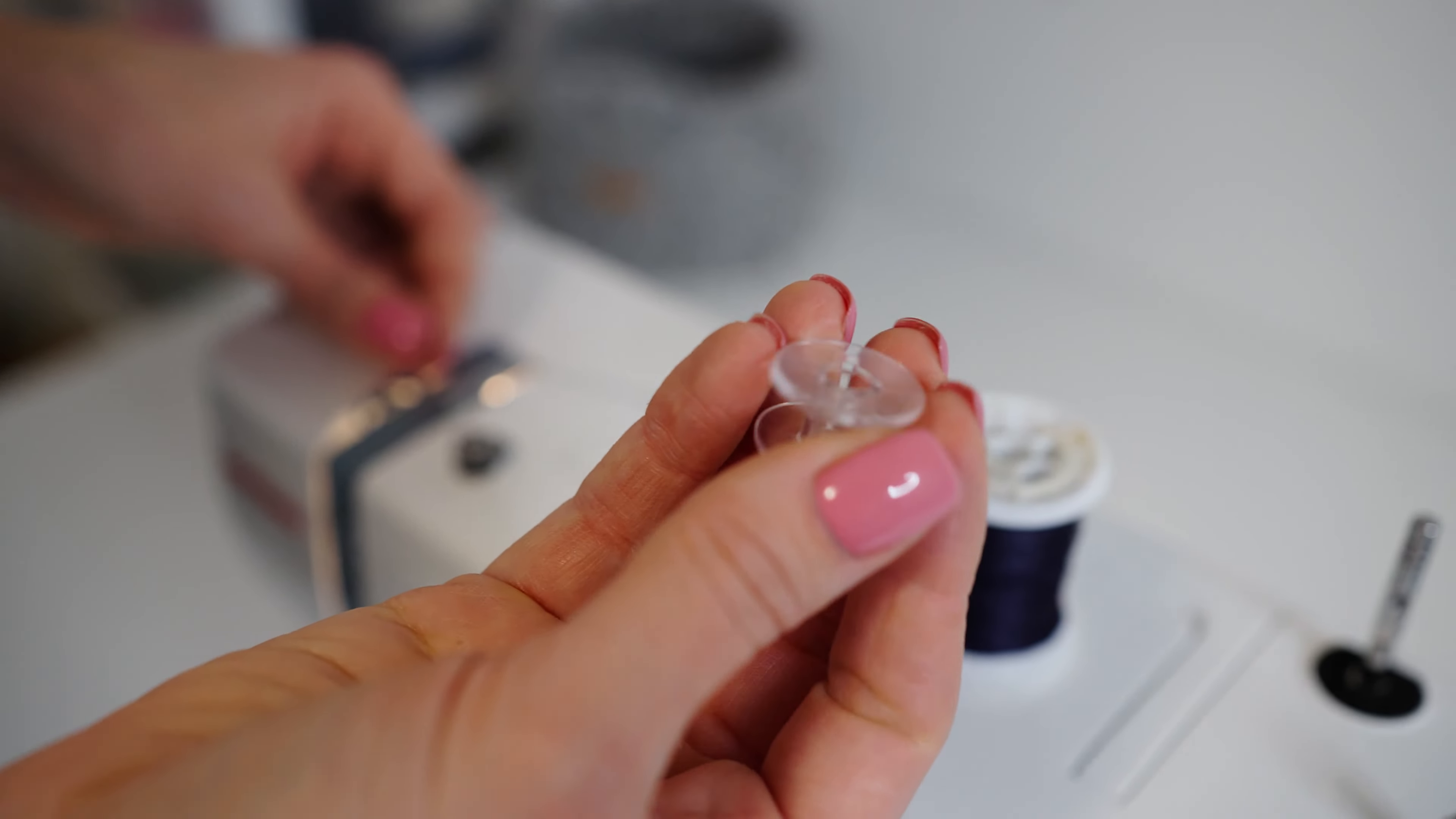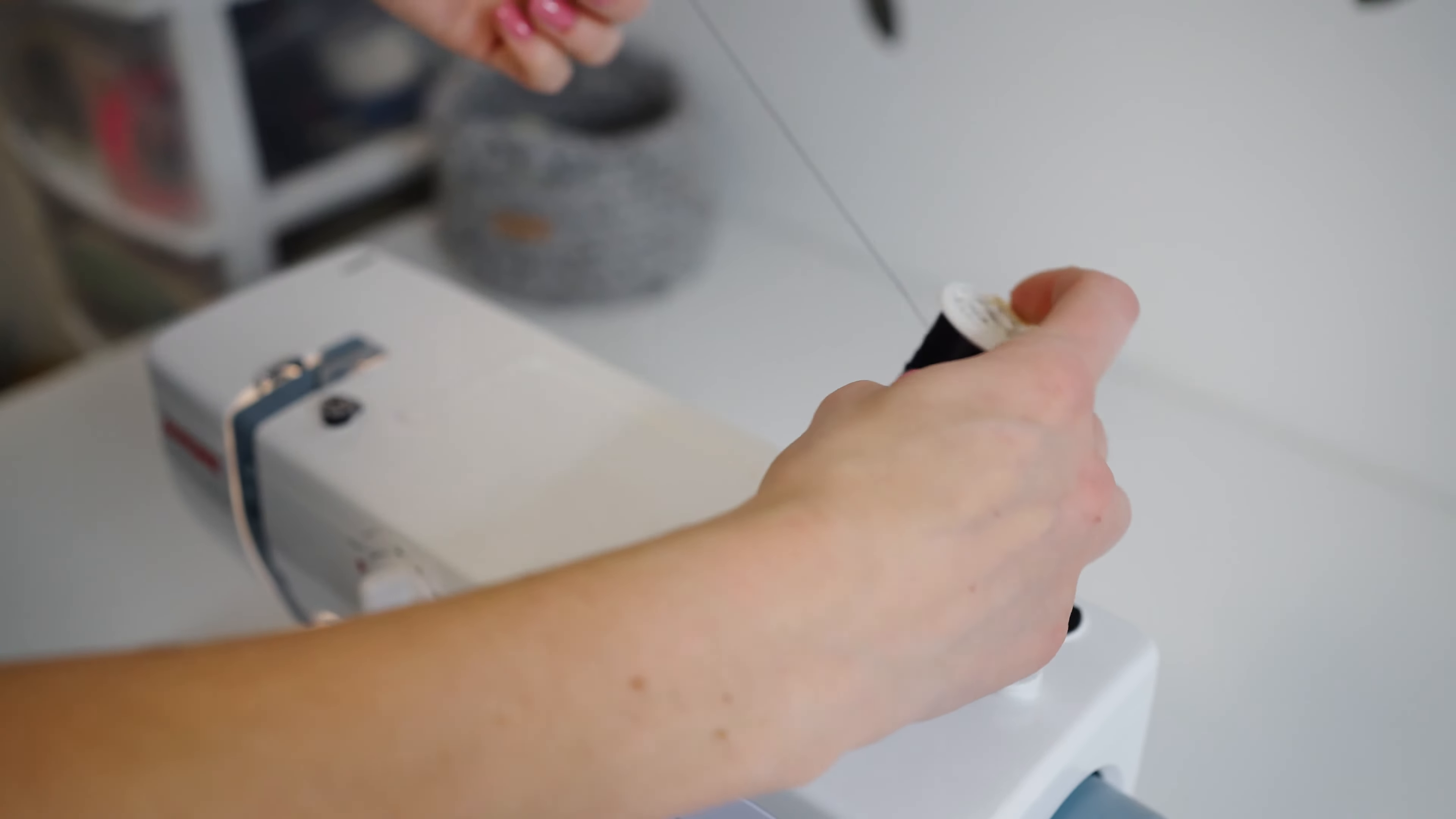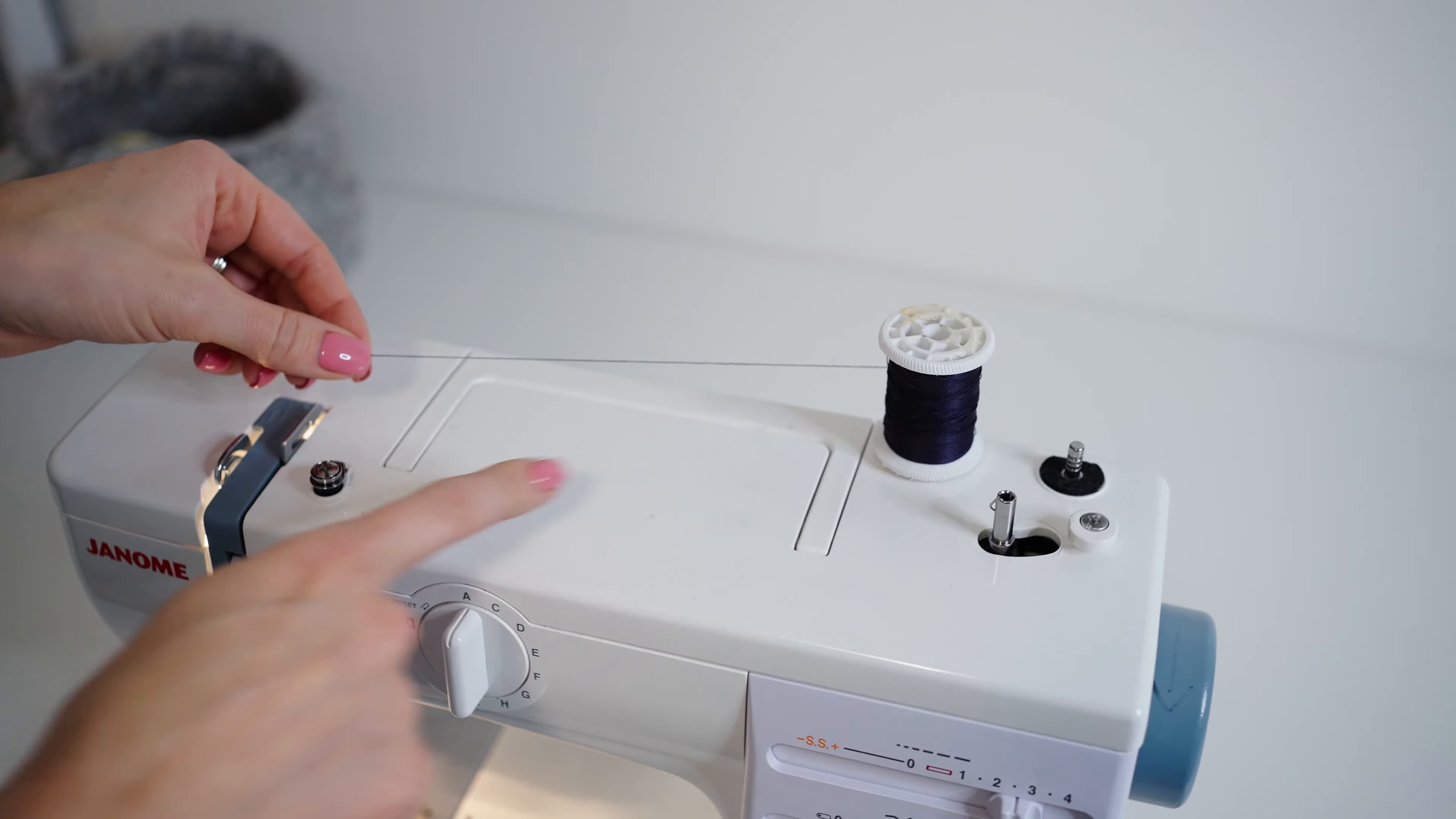I'm going to show you how to refill a bobbin. So this plastic thing is called a bobbin. You're going to take the thread that you want, the color, put it on your spool pin.